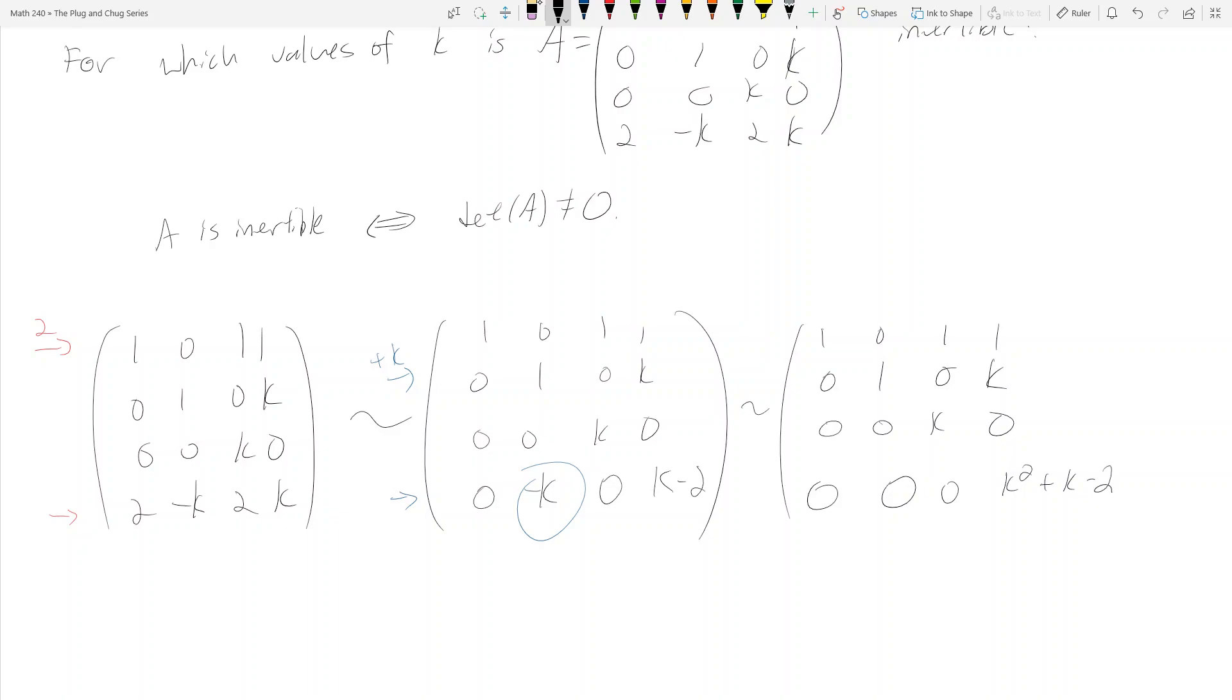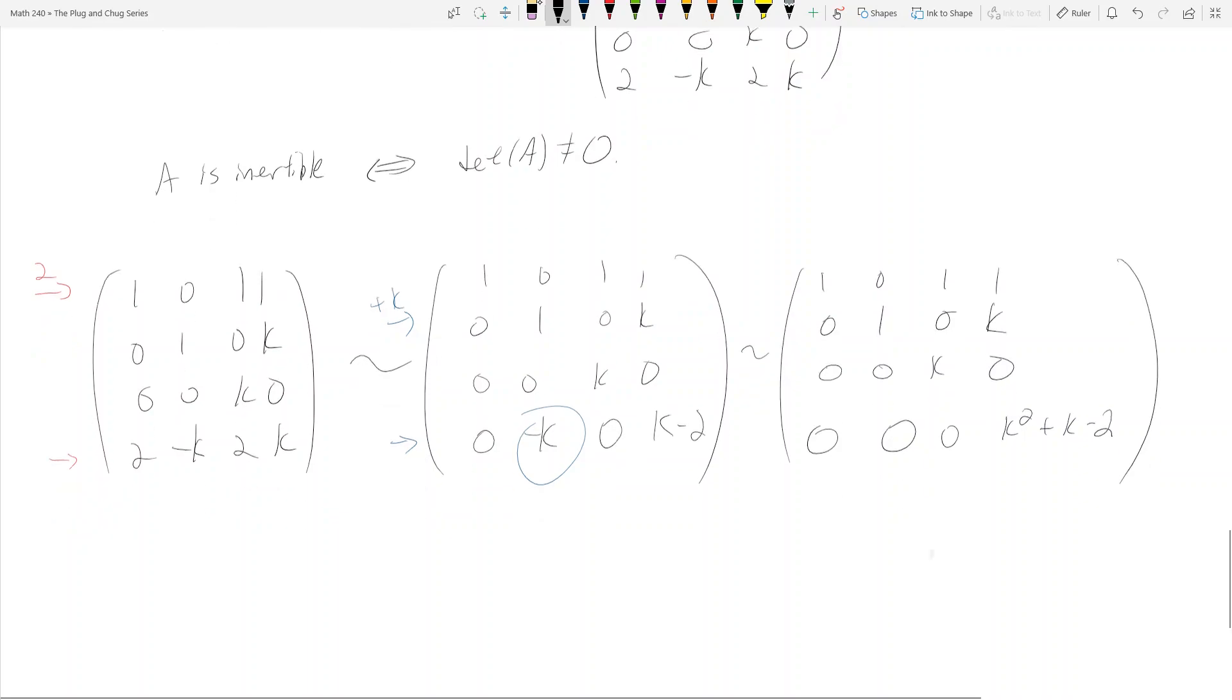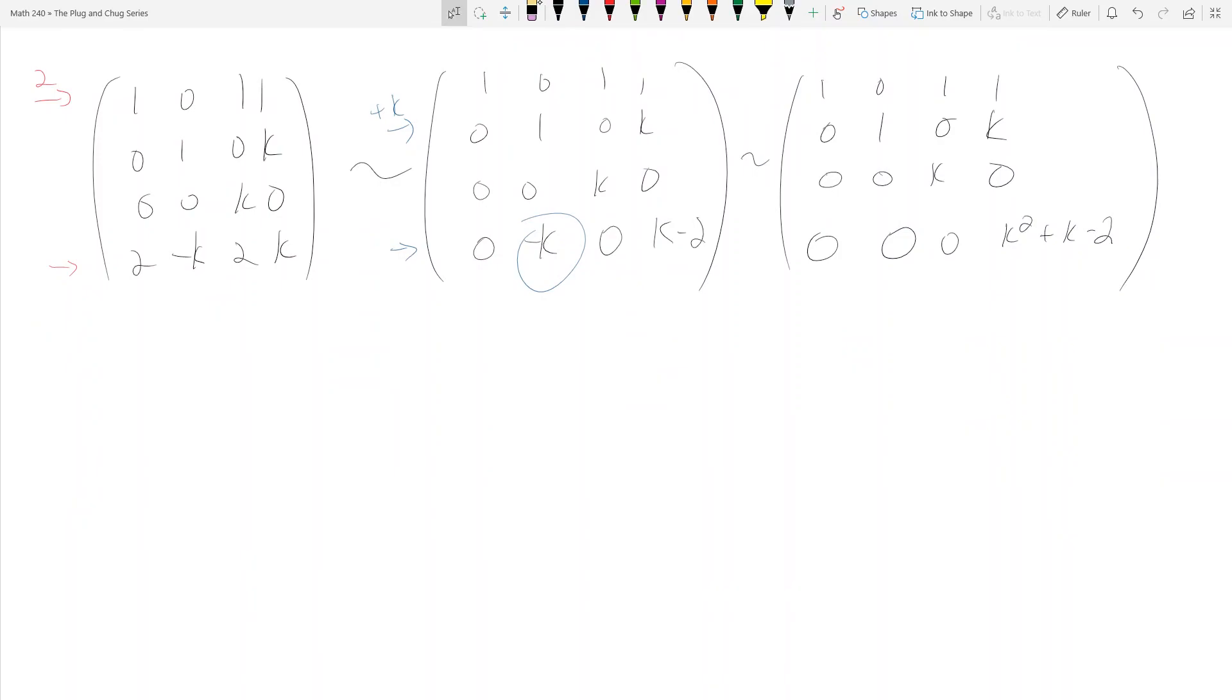So what's the determinant of this matrix? Well, we just multiply the diagonal. The determinant is equal to 1 times 1 times K times (K²+K-2), which is K(K²+K-2).